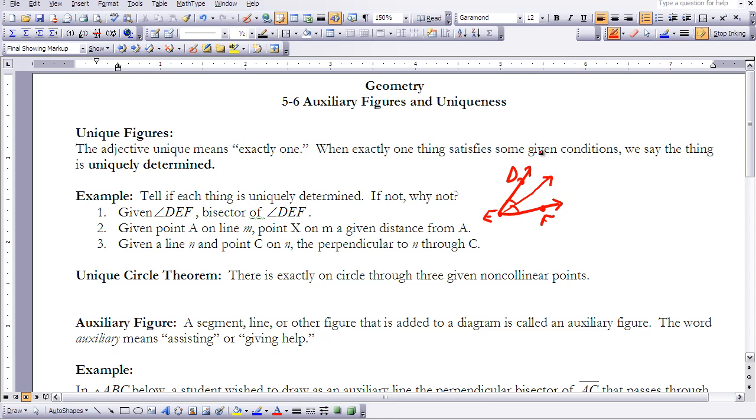Let's take a look at number two. Given point A on line M. So let's make line M and point A on it. We want to see if point X on M a given distance from A. So if this is A and I want to put point X on it a certain distance from A, say I said it was 10 units from A, I could put it over here or I could put it over here. This would be 10, this would be 10. So that would mean it is not uniquely determined.